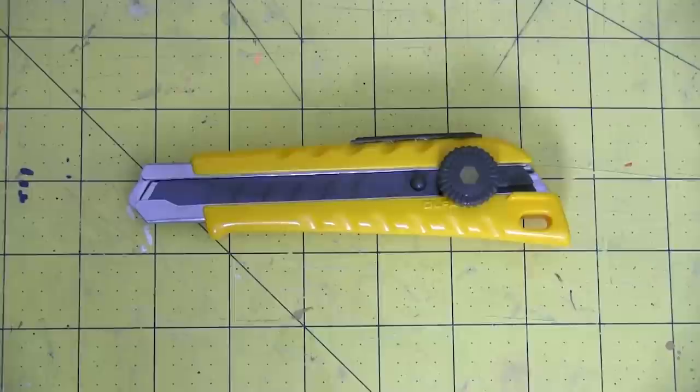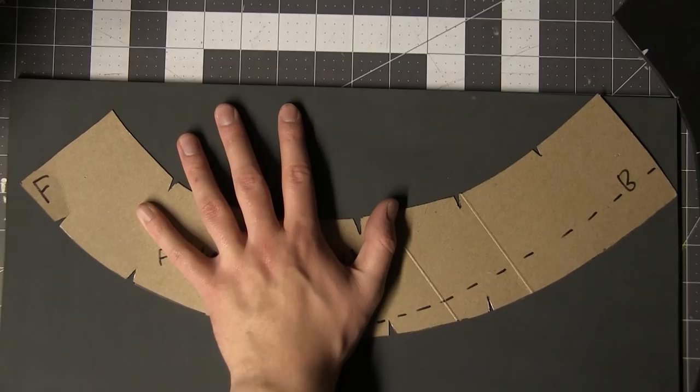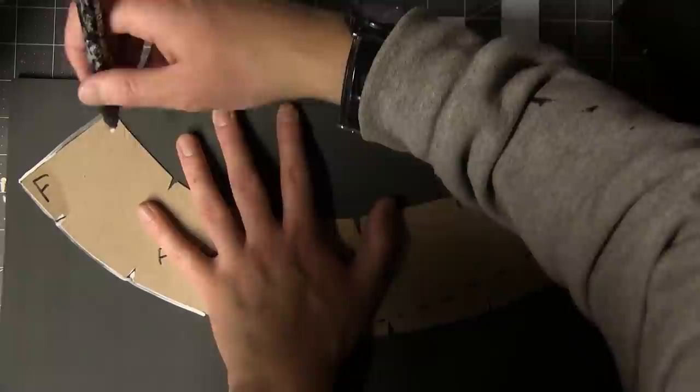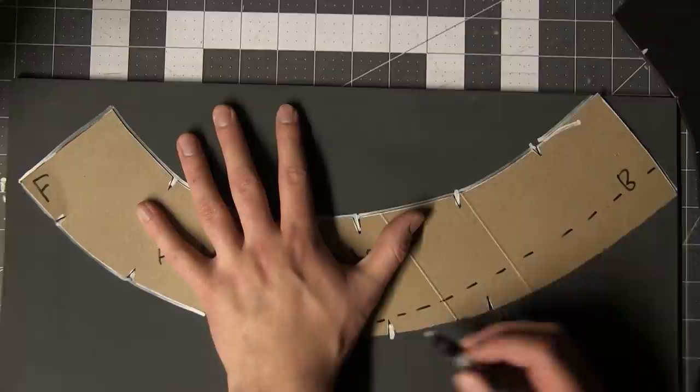I'm making this primarily out of EVA foam, mainly Cosplay Apprentice's What the Foam, because he sent me just a ton of it. This is just a generic helmet template that I made a while back. I'll have that available to you guys, linked in the description down below, once it's refined into a more specifically Mandalorian version and also not on a cereal box.